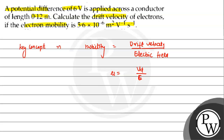Here, E is the electric field, Vd is the drift velocity, and mu is the mobility. Second, we use the relationship between electric field and potential difference. E equals V upon d.